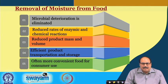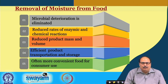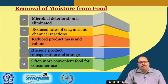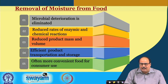In the earlier classes, we have discussed that the removal of moisture from food is an important operation for its preservation. It results in reduced microbial deterioration, reduced rates of enzyme and other causative chemical reactions for food spoilage, and reduced product mass and volume. This results in efficient product transportation and storage, and is often more convenient food for consumer use.